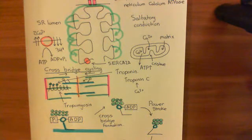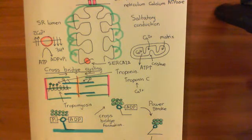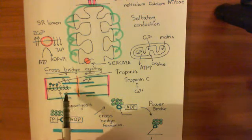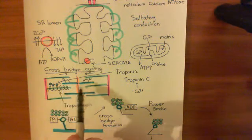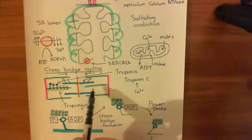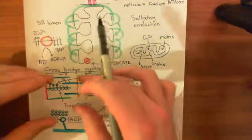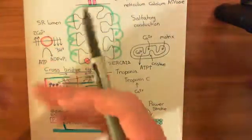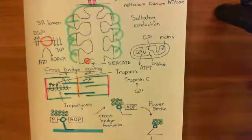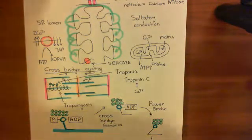That causes the calcium concentration to go down. Troponin C is therefore no longer bound to calcium, and the troponin molecule returns to its original conformation. That causes tropomyosin to return to its original conformation, covering the myosin binding sites on the actin filament. The myosin filaments can no longer interact with the actin filaments, and therefore everything just recoils under elastic recoil — and the cardiomyocyte relaxes. So that is cardiac muscle contraction.